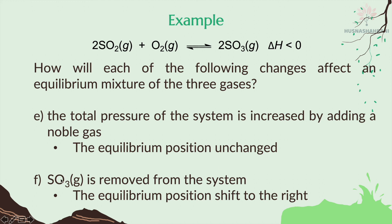F: SO₃ gas is removed from the system. When SO₃ is removed, the concentration of the product decreases. You need to balance it again by increasing the concentration of the product — meaning the reactants are consumed to produce more product. These two reactants will decrease in concentration, and the equilibrium position shifts to the right.